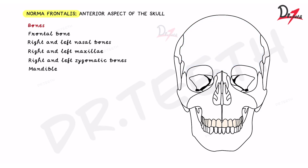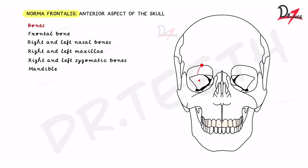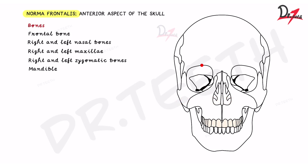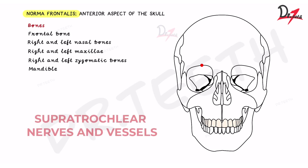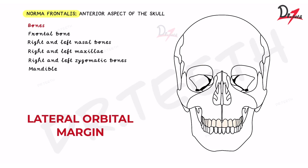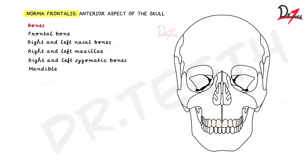If you start from the lateral aspect of the supraorbital margin and travel two-thirds of the distance, and from the medial aspect travel one-third, you will find a notch — or in many cases a foramen — called the supraorbital notch or foramen. This is the opening through which the supraorbital nerves and vessels pass. Just medial to this notch, the supratrochlear nerves and vessels also pass through.